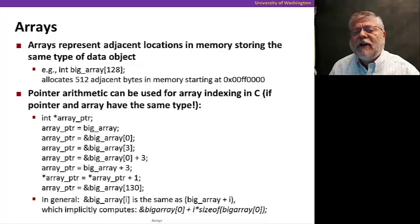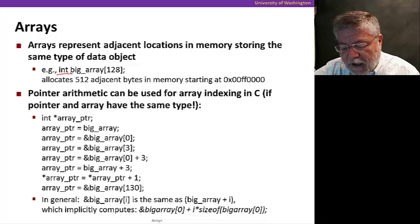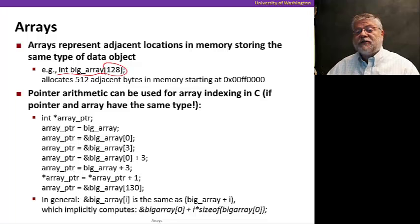Basically, arrays are adjacent locations in memory that store the same type of data object. In this example, I'm declaring an array of integers. Its name is big_array, and there's 128 integers in that array. That number between those square brackets.